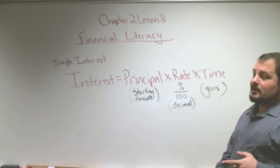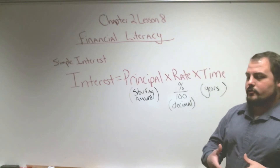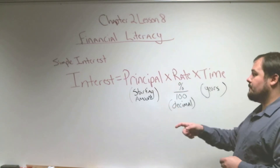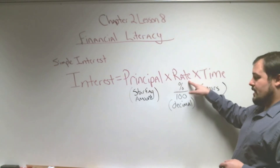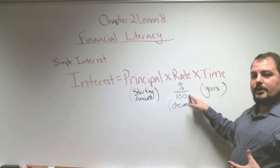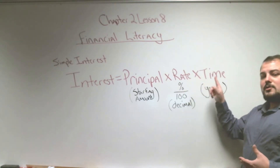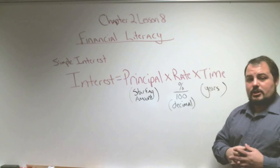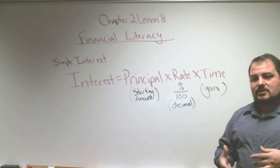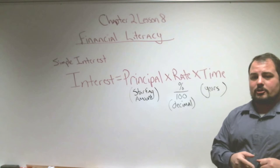The simple interest formula works like this: if we want to figure out how much interest we're going to get, we take the principal, which is our starting amount, and multiply it by the rate. A rate is usually a percentage, so we take that percentage and divide it by 100 because we want to express our rate as a decimal. Then we multiply by time, and time is always expressed in years. So we're multiplying three numbers, but we may need to convert them so they work with the formula.